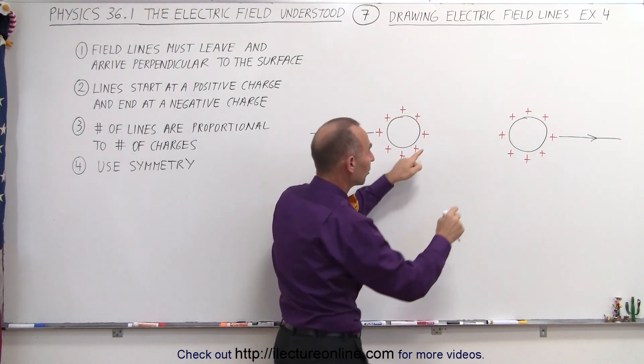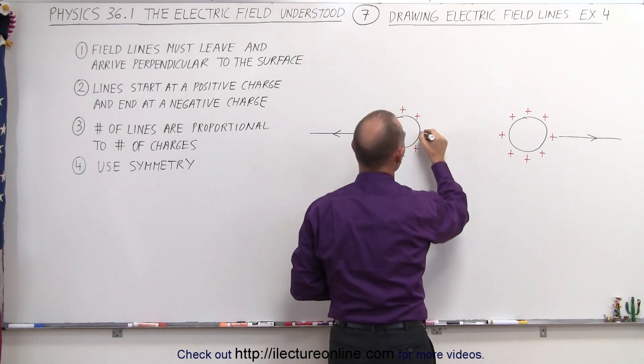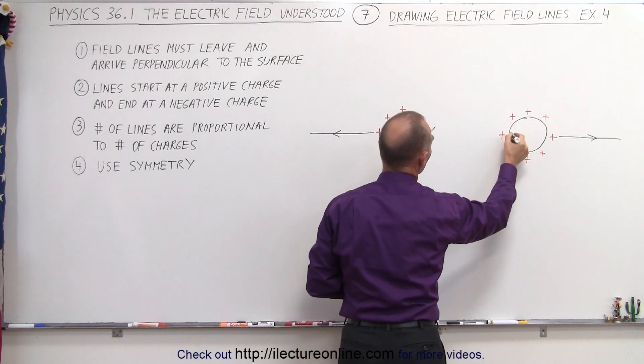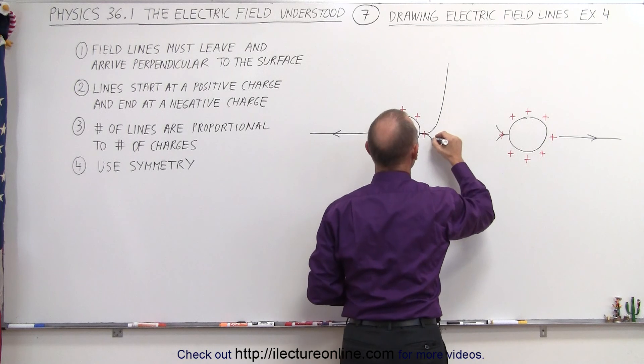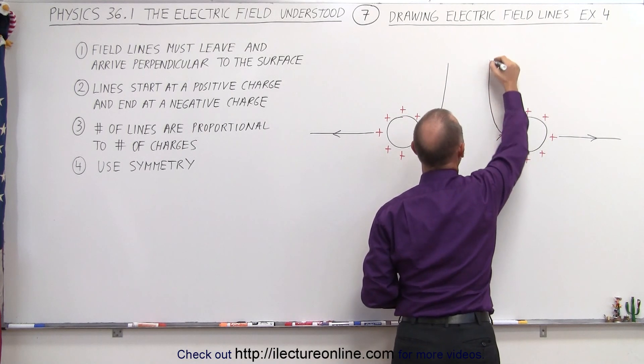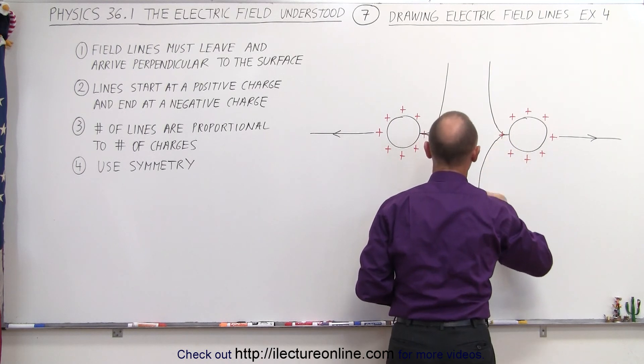So the way to do that is for the one that is directly across, you're going to have a line coming out, which is then going to split like this and like this. This line is going to split like this and like this, and the field lines are going to emanate in this direction, this direction, same over here, simply because of the repulsion between the positive charges.